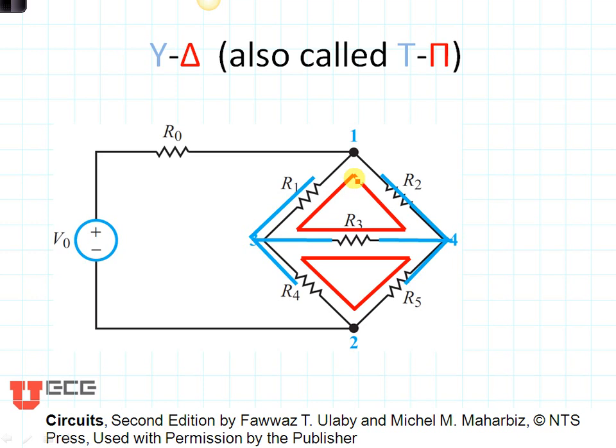The blue part of the circuit, R1, R3, and R4, is the Y part. You can see it's kind of shaped like a Y.